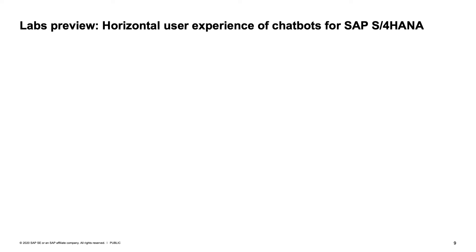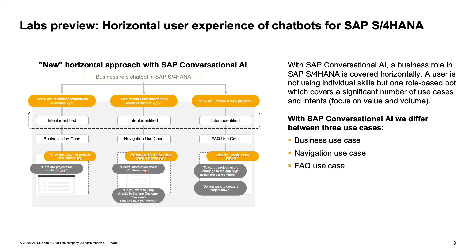What does it mean to have a horizontal user experience? With SAP Conversational AI, a business role in SAP S4HANA is covered horizontally — meaning a user is not using individual skills, but one role-based bot which covers a significant number of use cases and intents. The focus here is on value and volume compared to previously with SAP Copilot. We differentiate between business use cases based on the CRUD approach — create, read, update, and delete — plus a navigation use case and an FAQ (frequently asked question) use case.